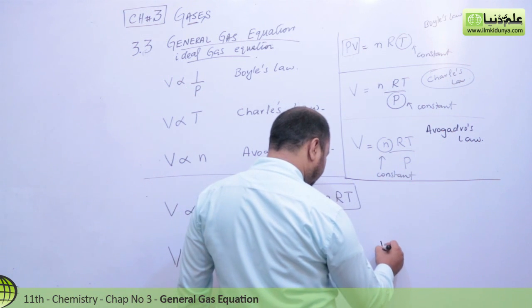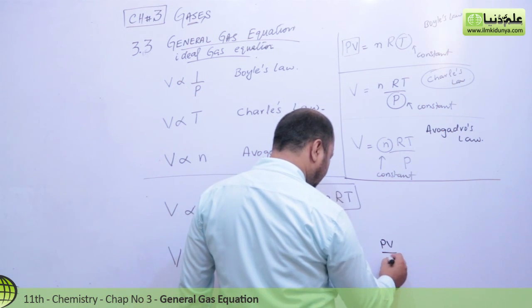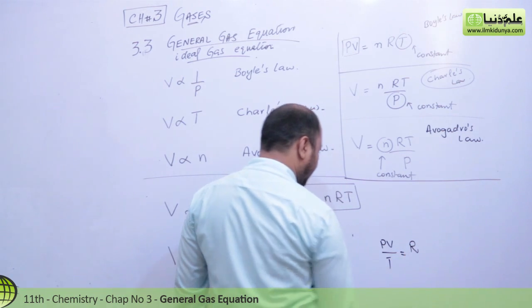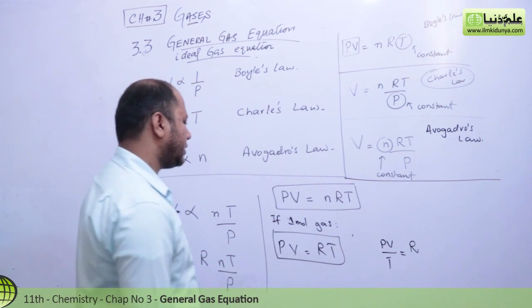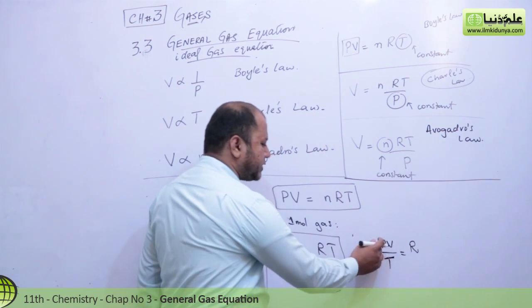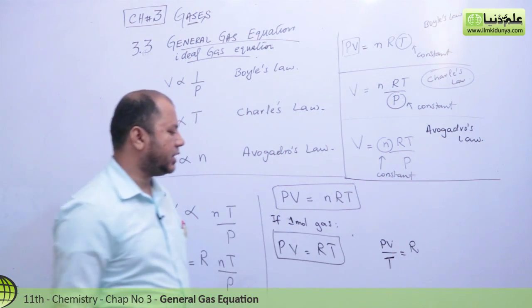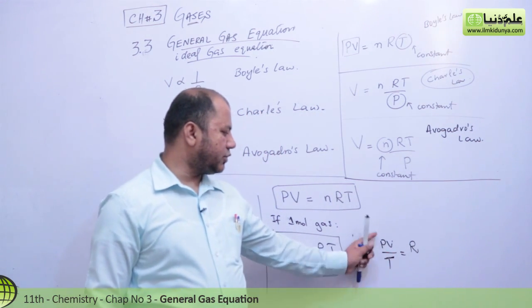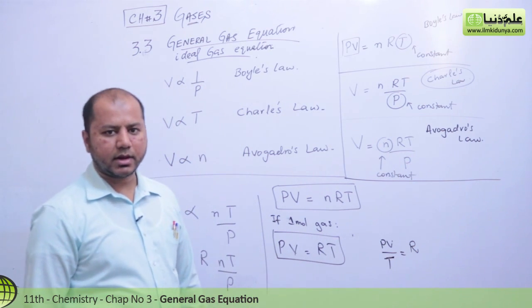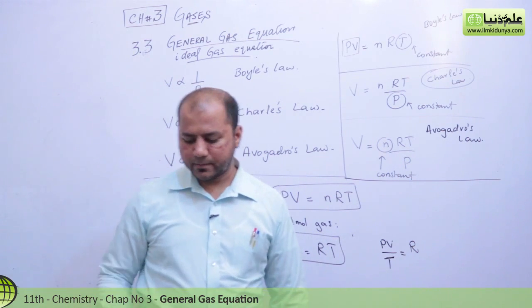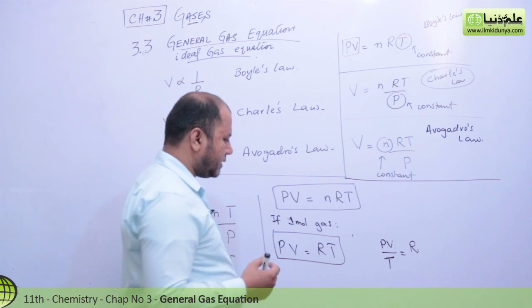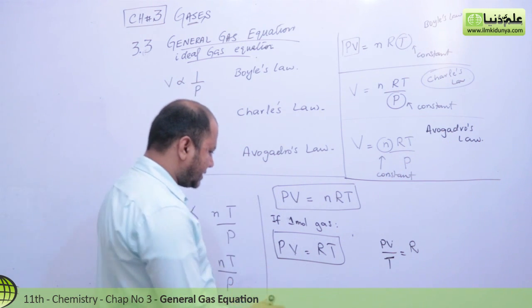I mean to say, the ratio of pressure times volume to temperature will be equal to R, the general gas constant. From this, you can make another relation as well.